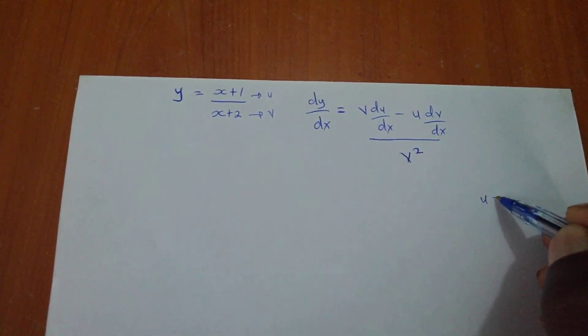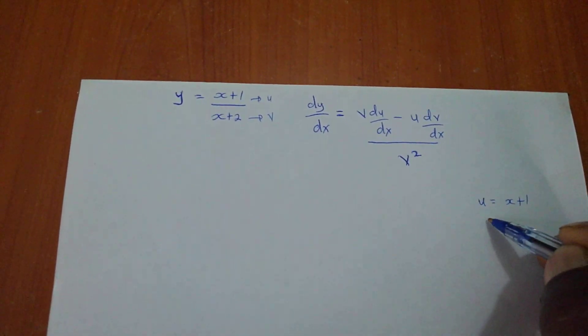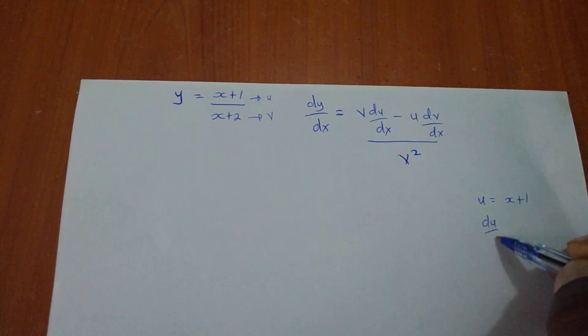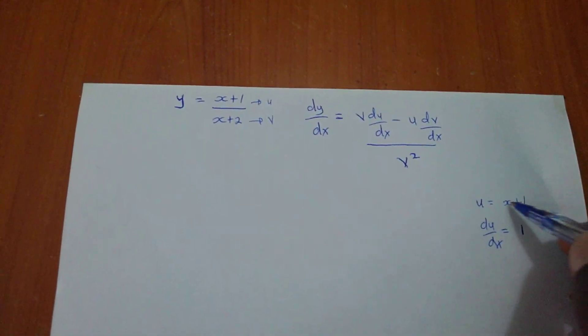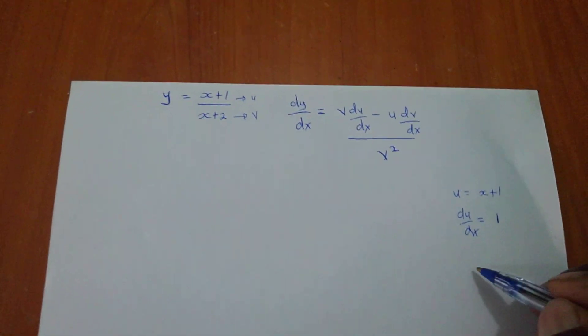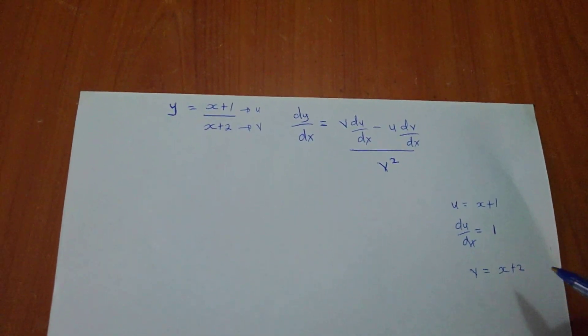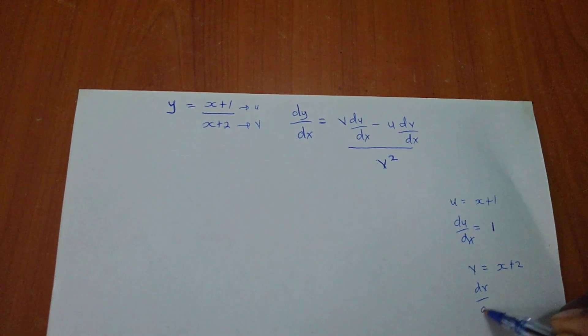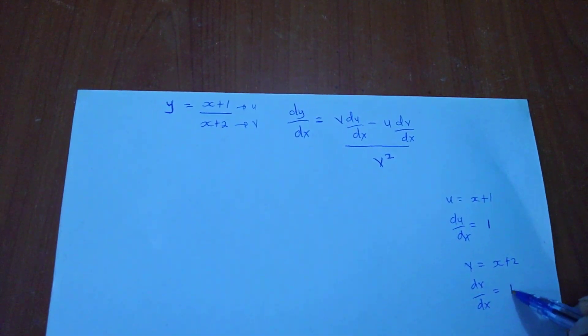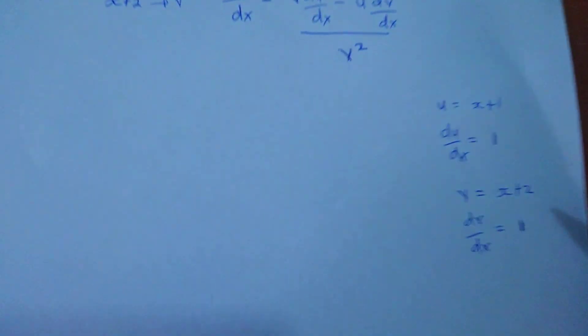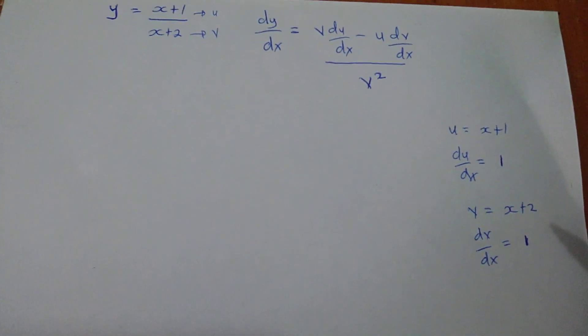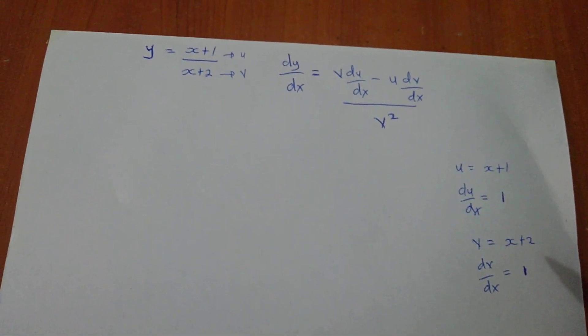I will say if u equals x plus 1, then du/dx will be 1 if you differentiate. And my v, if it is x plus 2, my dv/dx will be 1. I hope we are together on that, and there is no problem.